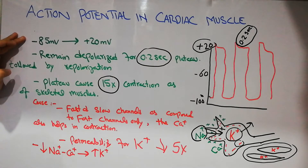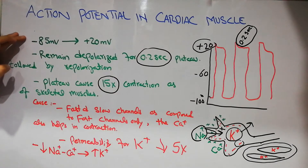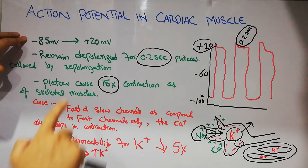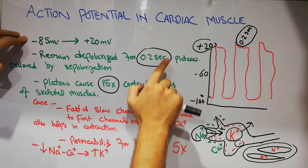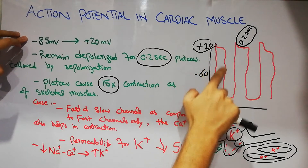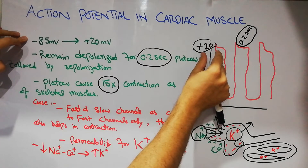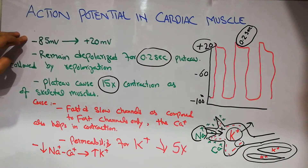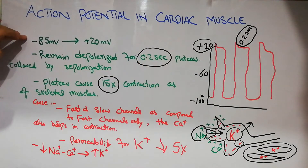In the action potential of cardiac tissue, which is a rapid wave of depolarization and repolarization, depolarization occurs very quickly but then repolarization does not occur quickly — rather, the depolarized state stays for 0.2 seconds.